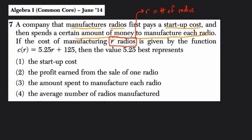So if you see a variable next to a word like this, that might mean or most likely will mean that that variable represents the number of the noun that's next to it. In this case, radio. So r is a number of radios. It's given by the function c(r) = 5.25r + 125.